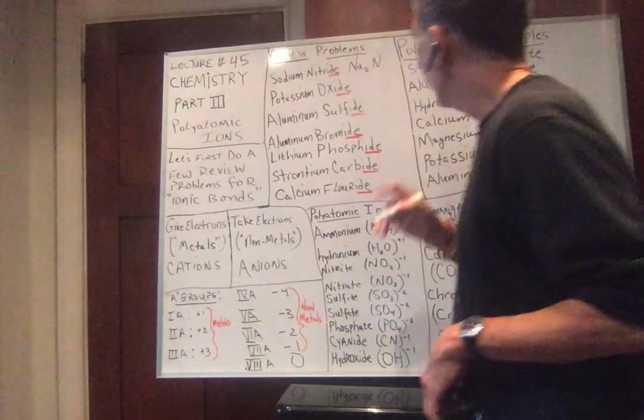Lithium phosphide. Lithium, group 1A, so it wants to give one electron — wants to be plus one. Phosphide: phosphorus is in group 5A, so it needs three electrons; P wants to be minus three. Gives one electron, needs three electrons, so we need three lithiums for one phosphorus. Lithium phosphide is Li₃P.